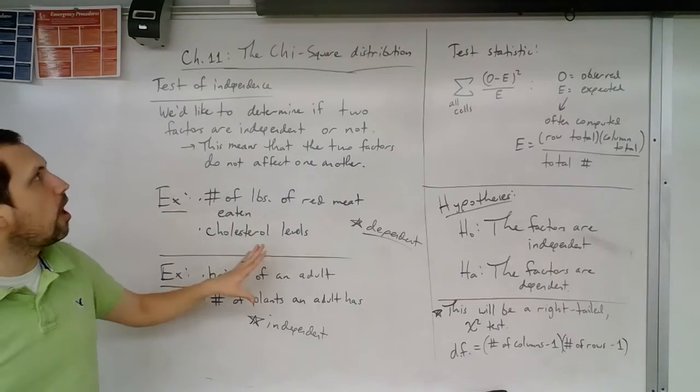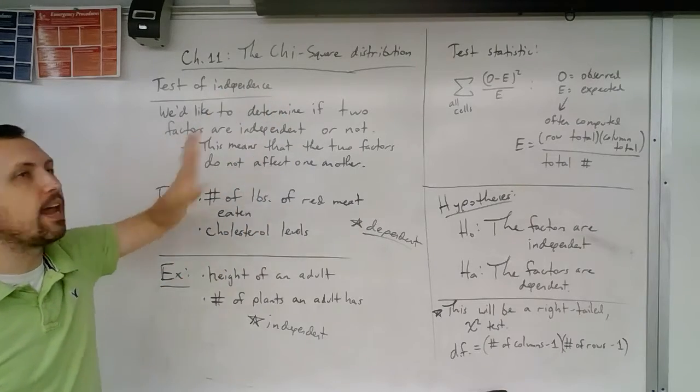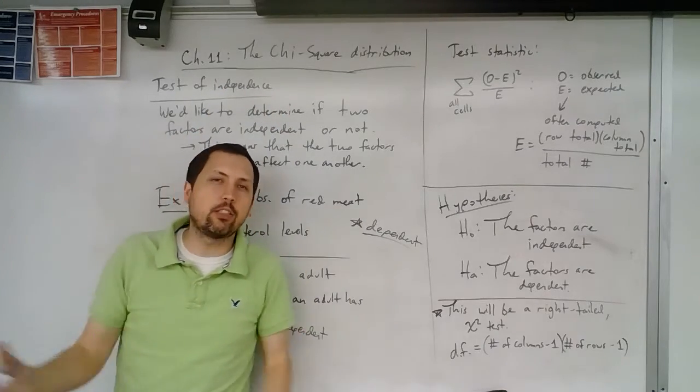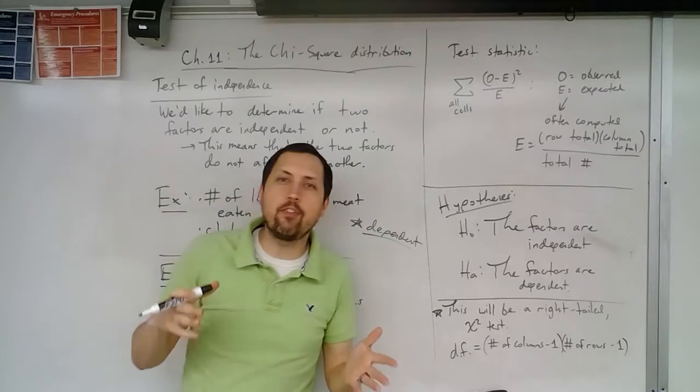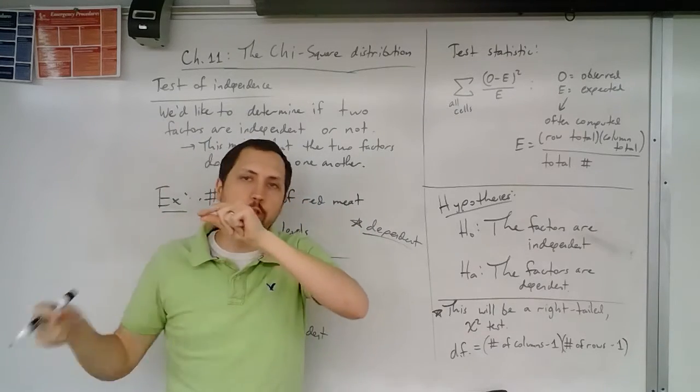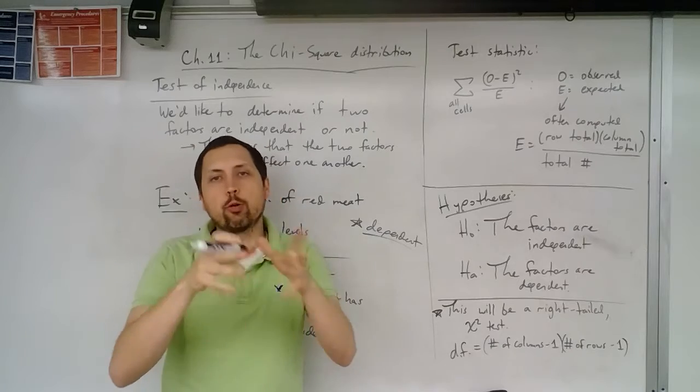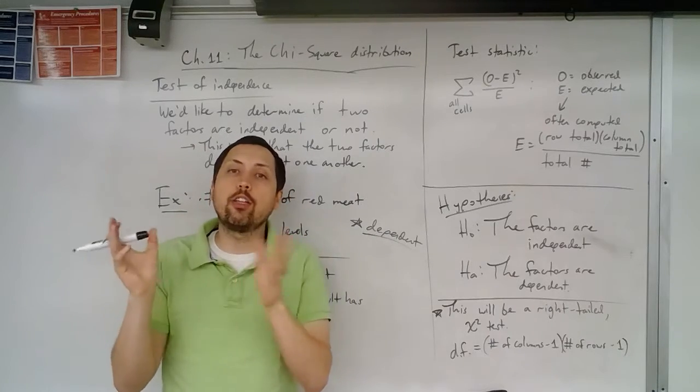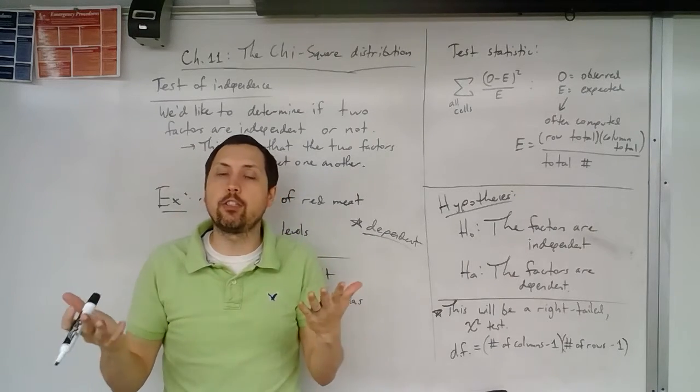So when we do some type of test of independence, we're asking that. There's going to be some type of table that I'll give you where we'll have a bunch of data summarized of these people with two factors. So we'll group them into categories and say, okay, are these two factors going to be independent of each other or not?